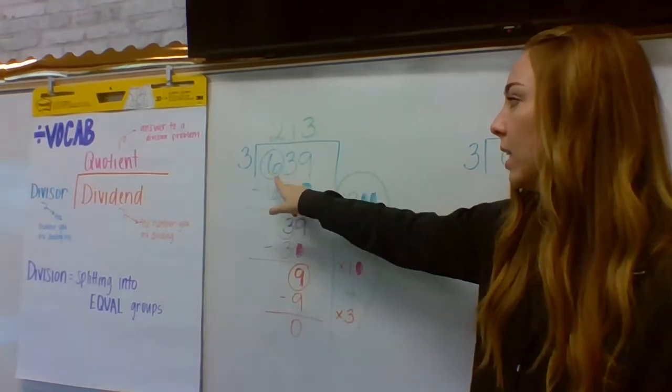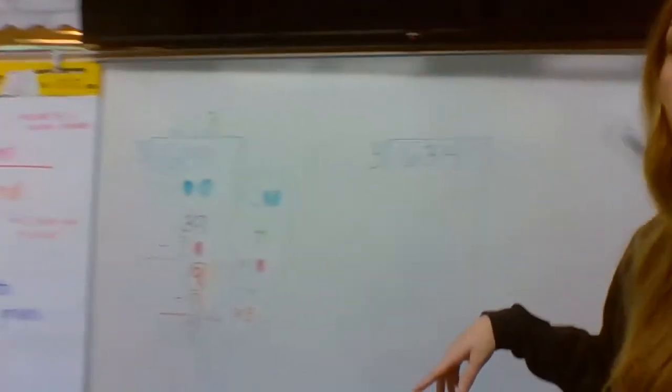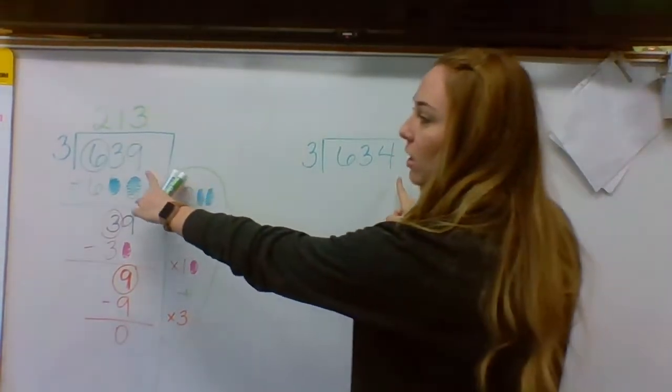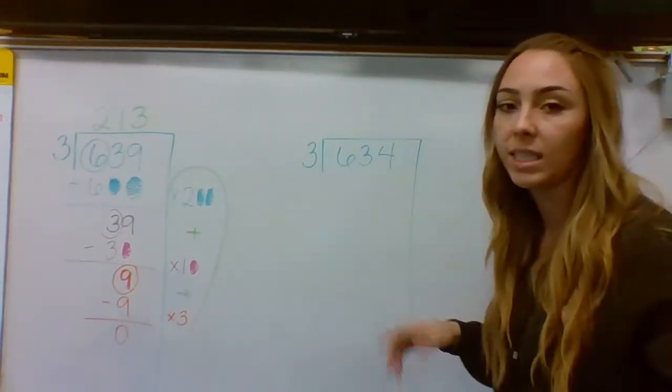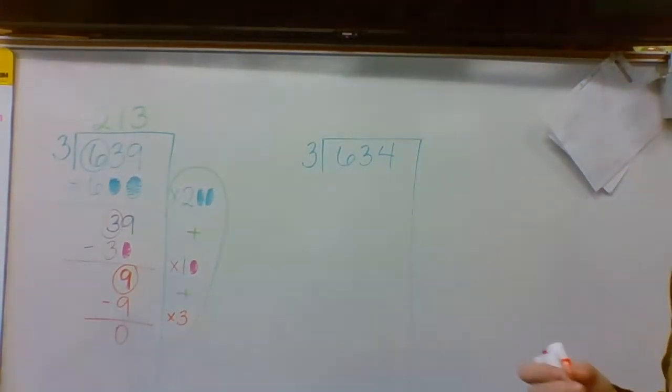I went from a dividend of 639 to a dividend of 634. So I only changed it by five. Just the ones place is slightly different. The steps up to that will be pretty similar.